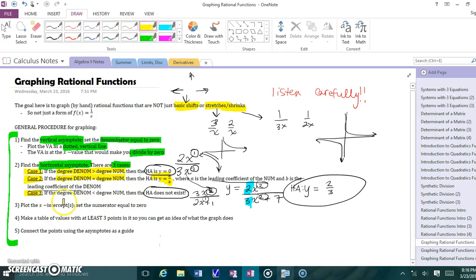Step number 3 is to find the x-intercept. The x-intercept is going to help us plot another point. For this, we're going to set the numerator equal to 0. Notice the similarity in this right here. The numerator tells you the x-intercept. The denominator tells you the vertical asymptote. Next step, make a table of values with at least 3 points so you can get an idea of what the graph does. Because you're not going to have enough points up to this point. Up to step 3, you'll have one extra point. You're going to need way more than that because we're not a calculator. We need to know what's going on here. The last step is to connect your points. You're going to use your asymptotes as a guide.